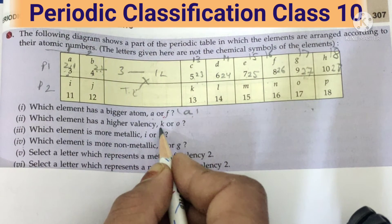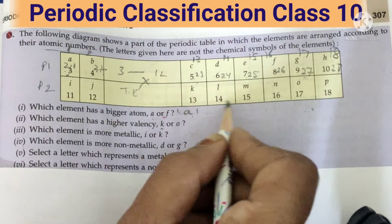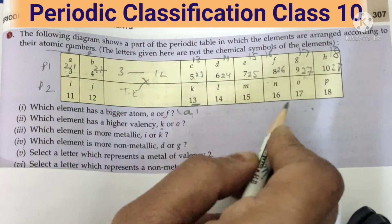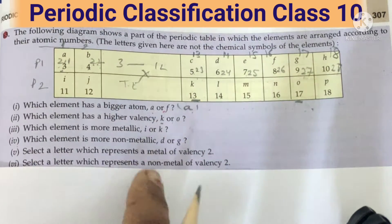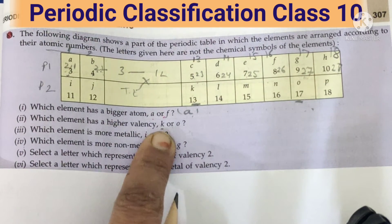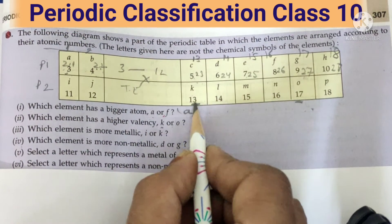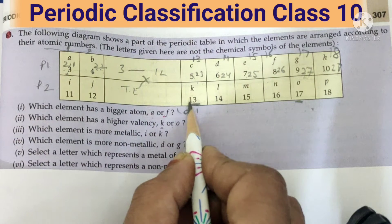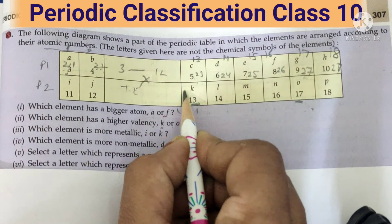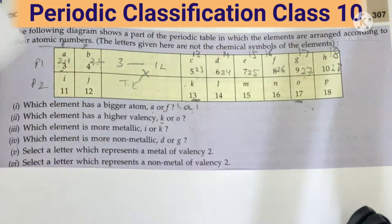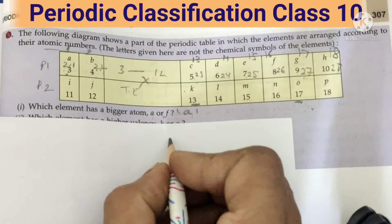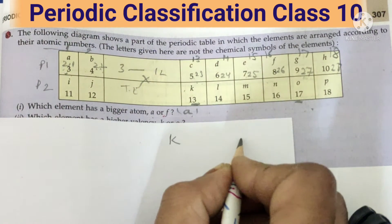Come to the next one. Which element has higher valency, K or O? Which valency is more? So for finding valency what to do? Let's see. This is three. So K, let's write down.